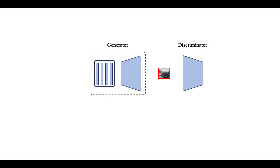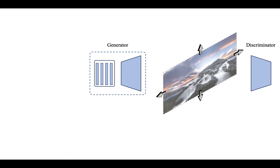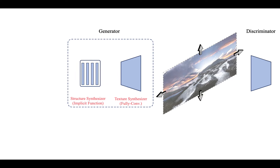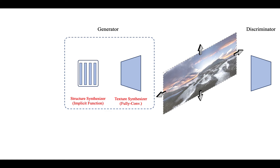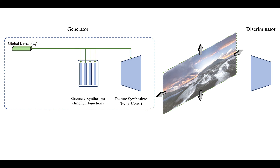InfinityGAN is a generative adversarial learning framework that consists of a patch generator and a patch discriminator. InfinityGAN aims to synthesize infinite resolution images by parts — independently, seamlessly, and memory-efficiently. The generator is composed of an implicit function-based structure synthesizer and a fully convolutional texture synthesizer. A global latent variable represents the holistic appearance of the implicit infinite-resolution image, and is applied to both the structural synthesizer and the texture synthesizer.